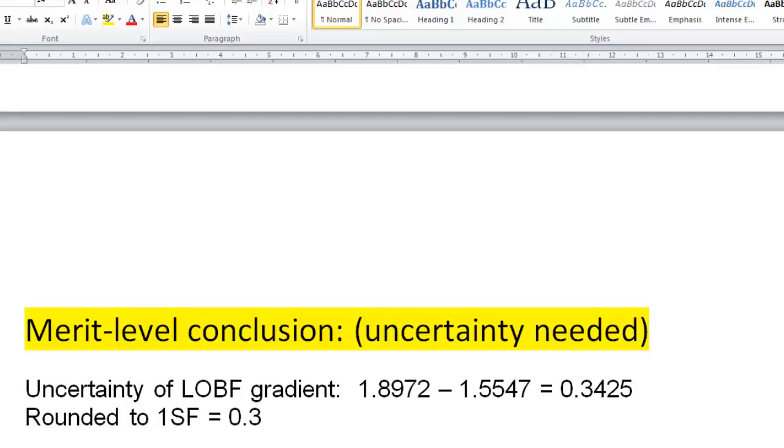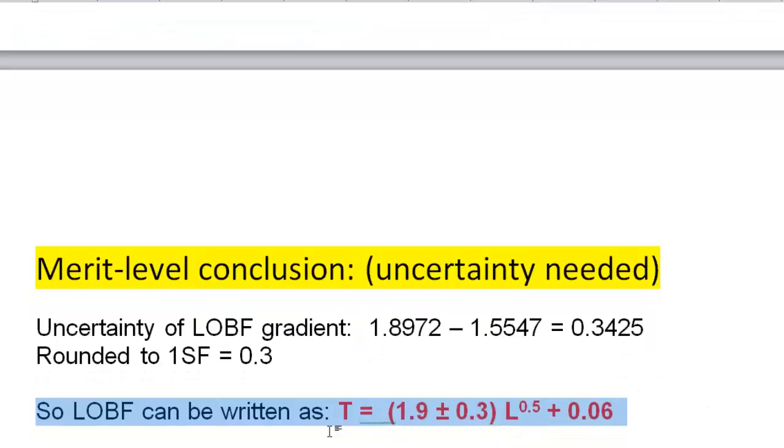Anyway, eventually you get to rewrite your line of best fit. And our line of best fit now can include this uncertainty. Basically, how good is our gradient on our line of best fit? It's 1.9 plus or minus 0.3. I've also rounded off the back number so it can have the same number of significant figures. You could play around with this and round it off more, but you probably don't want to do too much of extreme rounding.